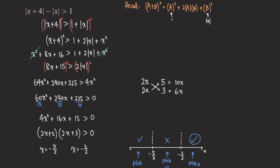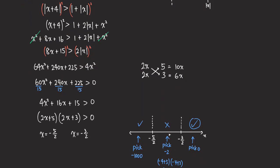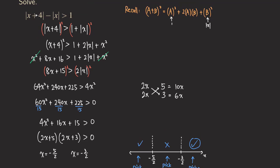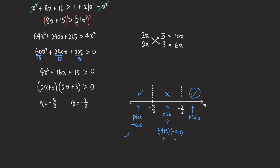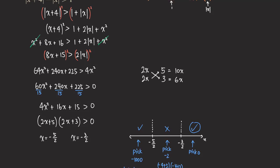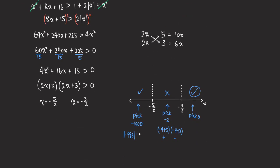So that interval around zero works. The middle interval we already know doesn't work. Now we need to check the x < −5/2 interval. We put −1000 into the original inequality: |−1000 + 4| − |−1000| = |−996| − 1000 = 996 − 1000 = −4, which is not greater than 1. So that interval doesn't work anymore. The only interval that really works is x > −3/2.